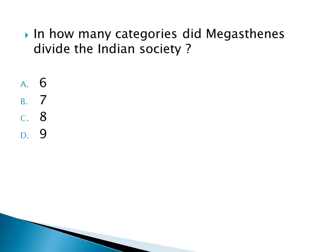In how many categories did Megasthenes divide Indian society? Option A: 6, Option B: 7, Option C: 8, Option D: 9. The right answer is Option B: 7.